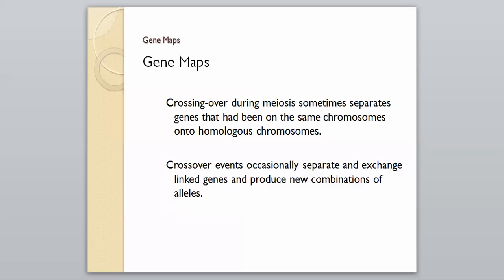Another breakthrough was the idea of gene maps, which describe the distances between genes. Gene maps are explained by the fact that crossing over during meiosis sometimes separates genes that had been on the same chromosome onto homologous chromosomes. If you recall the picture of the brown and purple chromosomes — originally they were all their own, but then a piece of the brown went to the purple and a piece of the purple went to the brown, so information that used to be on one chromosome is now on homologous chromosomes.